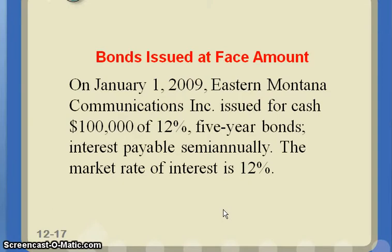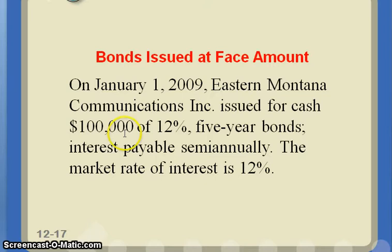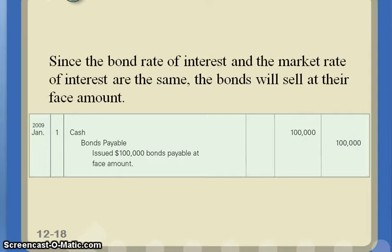Let's look at some journal entries for bonds. On January 1st, 2009, Houston Montana issued for cash $100,000 of 12% five-year bonds, interest payable semi-annually, market rate of interest 12%. The market rate is the same as our stated rate — our contract rate — so we know we're in a good situation. On day one, the journal entry is simply a debit to cash and a credit to bonds payable for $100,000. We don't record the 12% interest or anything like that on day one.